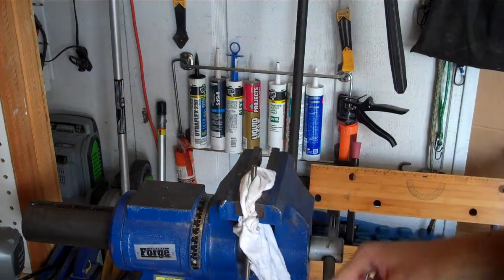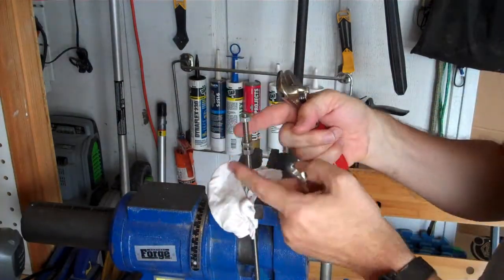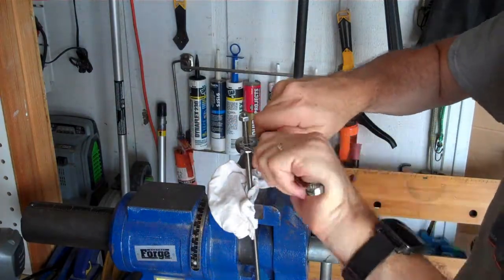Now, if you don't have a vise to clamp the threaded rod, you can put two nuts on a threaded rod, lock them against each other, and then use another wrench to hold the threaded rod.